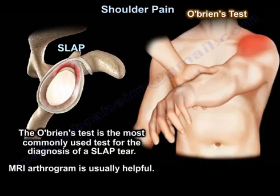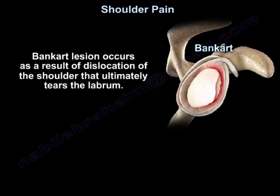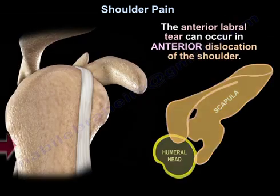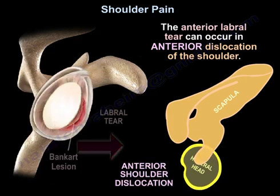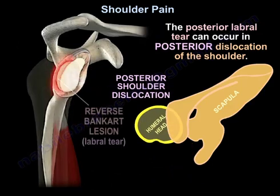The O'Brien test is the most commonly used test for the diagnosis of a SLAP tear, and MRI arthrogram is usually helpful. Bankart lesion occurs as a result of dislocation of the shoulder that ultimately tears the labrum. The anterior labral tear can occur in anterior dislocation of the shoulder, and the posterior labral tear can occur in posterior dislocation of the shoulder.